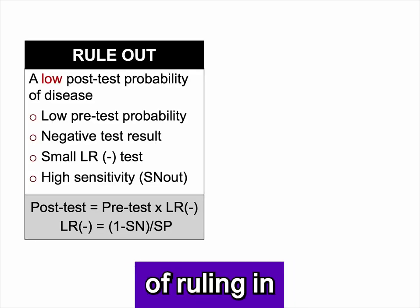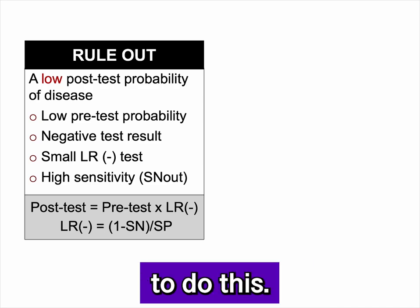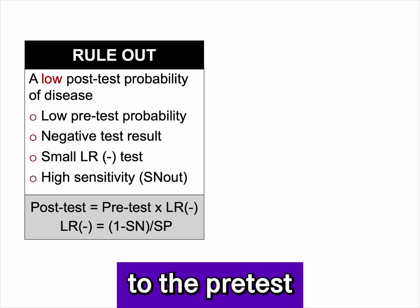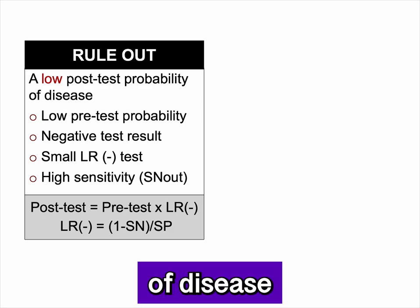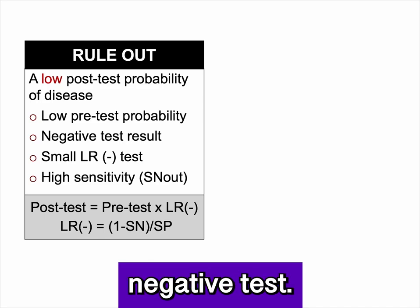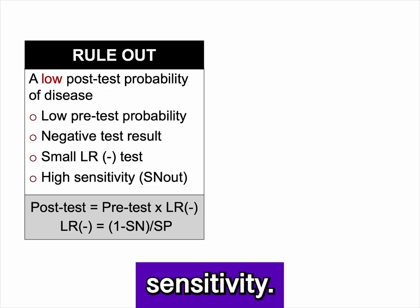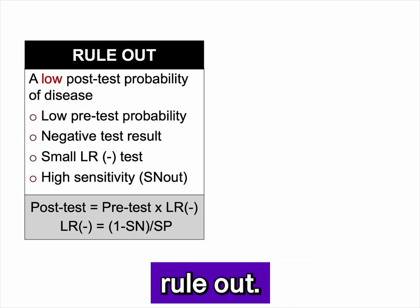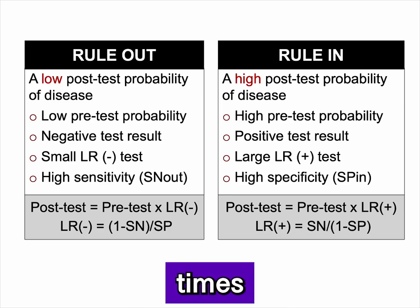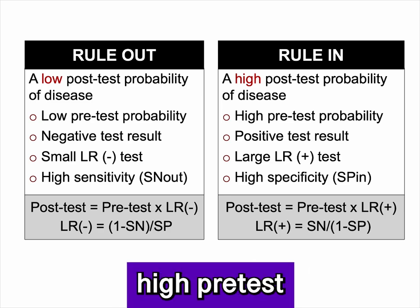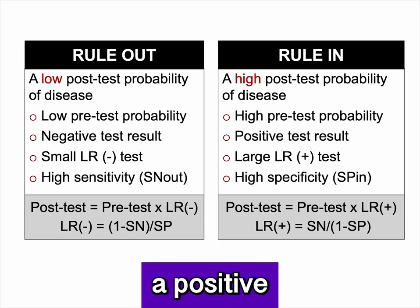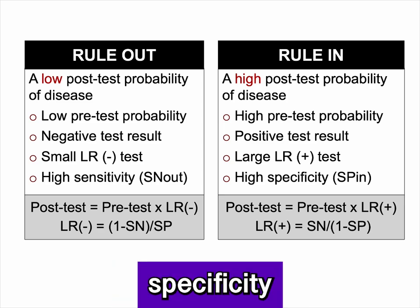To rule out disease, you want a low posttest probability, achieved with a low pretest probability, a negative test result, and a small likelihood ratio of a negative test. A small likelihood ratio of a negative test is obtained with high sensitivity — hence the mnemonic SnNout: sensitivity, rule out. To rule in disease, you want a high posttest probability, achieved with a high pretest probability, a positive test result, and a large likelihood ratio of a positive test, obtained with high specificity — hence SpPin: specificity, rule in.